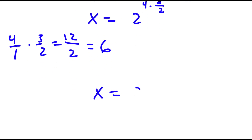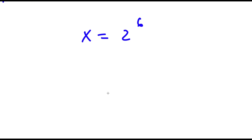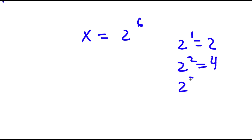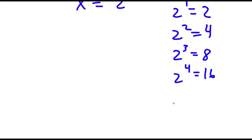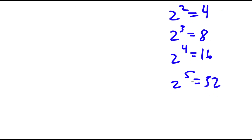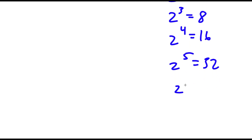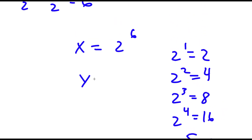So now I have x is equal to 2 to the power of 6. Well, 2 to the power of 1 is 2, 2 to the power of 2 is 4, 2 to the power of 3 is 8, 2 to the power of 4 is 16, 2 to the power of 5 is 32. Notice how it doubles every time, so 2 to the power of 6 would be double 32, which is going to equal 64. So I have x is equal to 64.